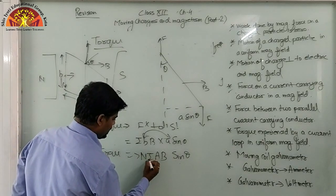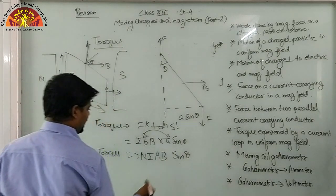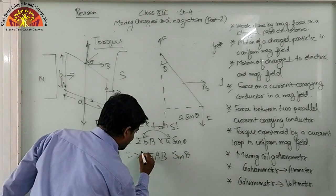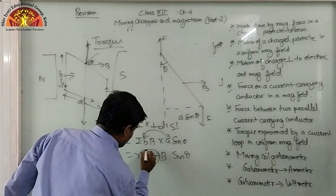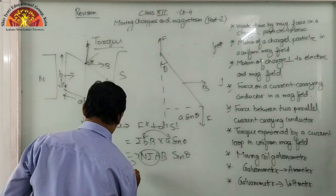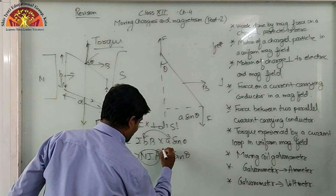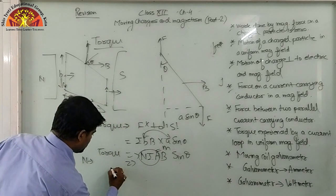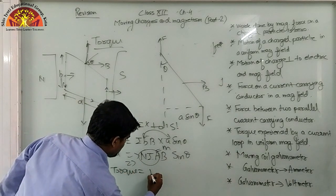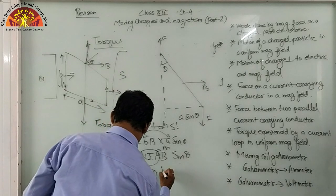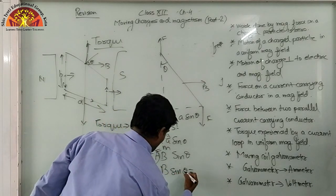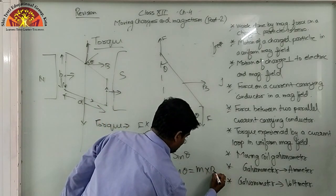NIA is known as the magnetic moment, denoted by small m. So torque equals m·B sinθ, or in vector form, torque = m × B. This is the formula for torque produced in the magnetic field for N turns.